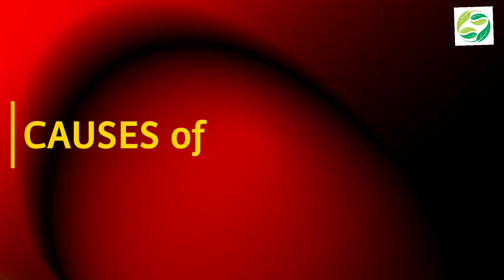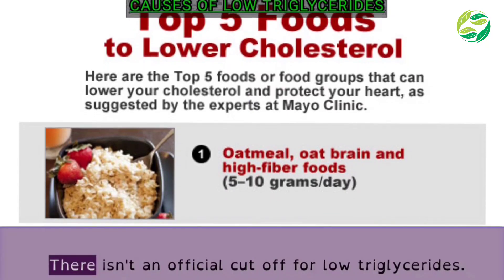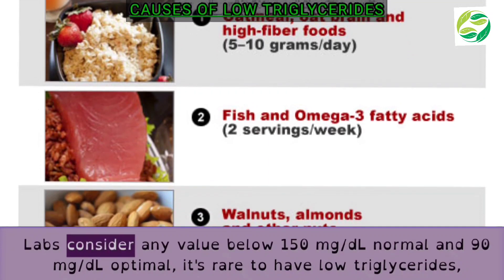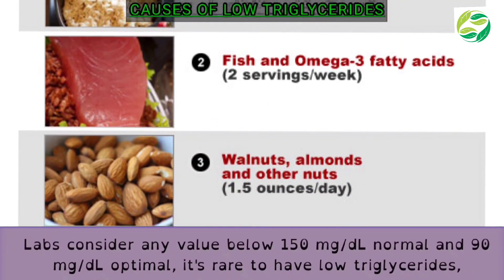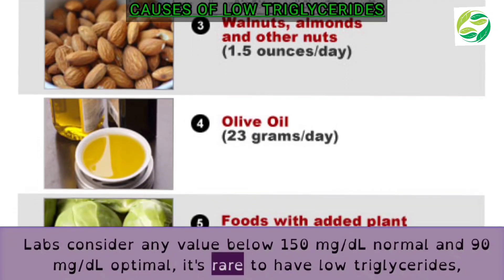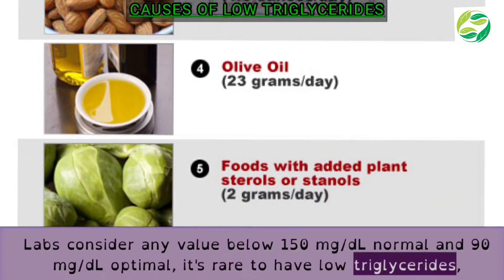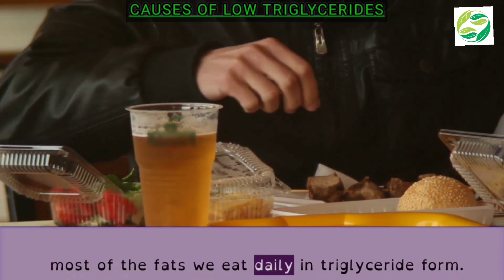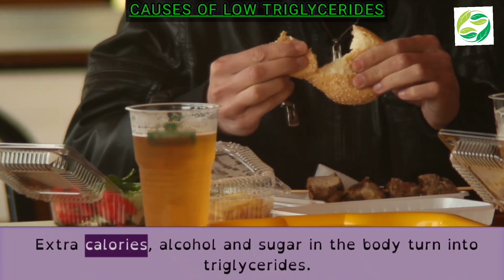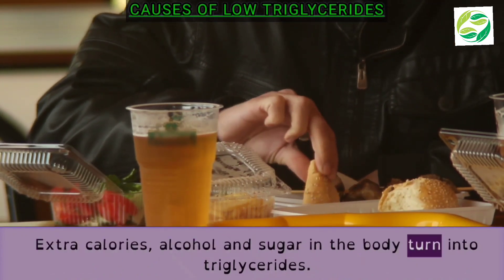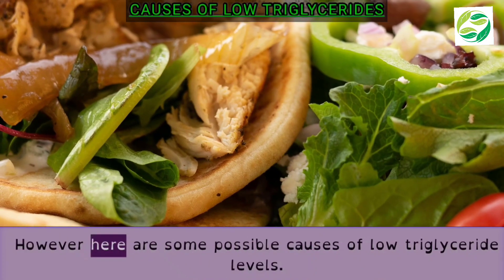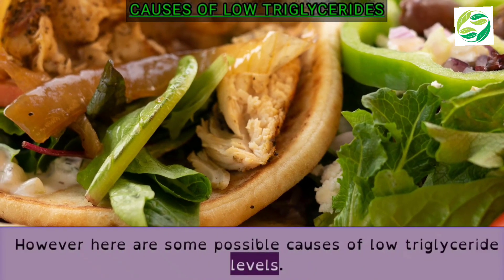Causes of low triglycerides: There isn't an official cut-off for low triglycerides. Labs consider any value below 150 mg per deciliter as normal, and 90 mg per deciliter is optimal. It's rare to have low triglycerides, as most of the fats we eat daily are in triglyceride form, and extra calories, alcohol, and sugar in the body turn into triglycerides. Here are some possible causes of low triglyceride levels.